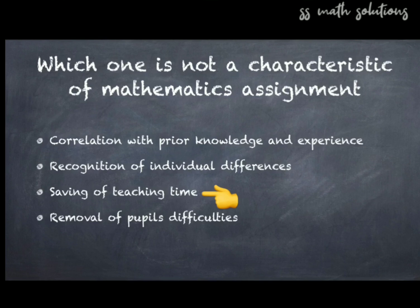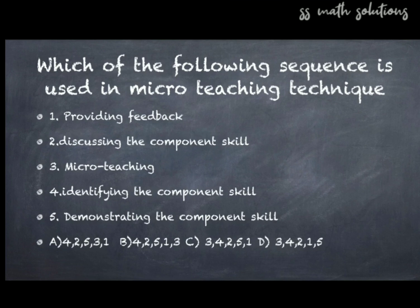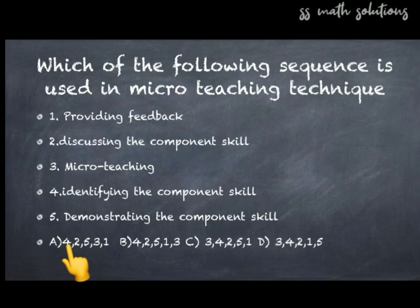Question 26: Which of the following sequences is used in the micro teaching technique? The steps are: providing feedback, discussing the component skill, micro teaching, identifying the component skill, demonstrating the component skill. The correct sequence is option A — four, two, five, three, one — meaning: identifying the component skill, discussing the component skill, demonstrating the component skill, micro teaching, and then providing feedback.